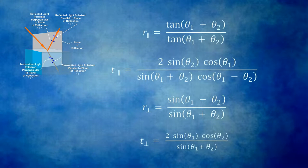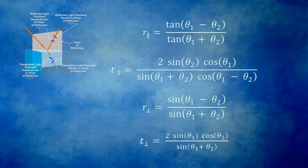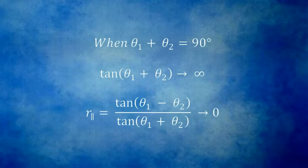Equations describing the reflection and transmission for both the parallel and perpendicular components as a function of angle were developed by a scientist by the name of Fresnel, and this is why we often refer to this reflection as Fresnel reflection. What is important to remember is that when light is reflected, it becomes partially polarized. One interesting characteristic from the Fresnel equations is that when the angle between the reflected and transmitted lights is equal to 90 degrees, the reflected light component parallel to the plane of reflection is zero, and the reflected light becomes completely polarized. This angle of incidence is known as Brewster's angle.